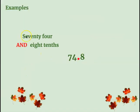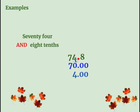Try out some examples. Here we have 74 and 8 tenths. This is our word form. This is how we write it in standard form — standard form just means the way you'd normally write a number. For expanded form, we're going to take this 7, which is really worth 70 because it is in the tens place. Notice how I brought it down and put zeros for the other places.